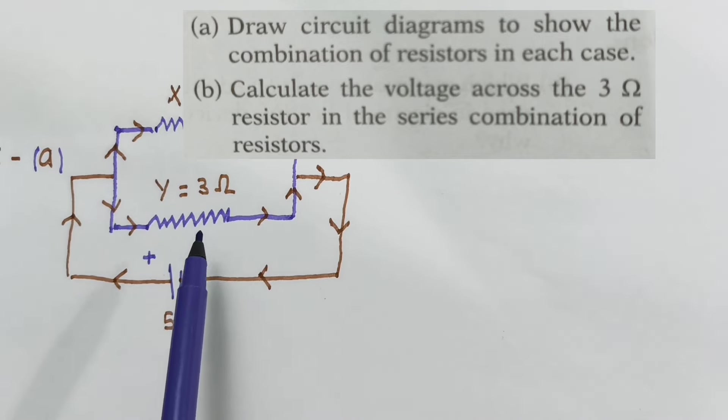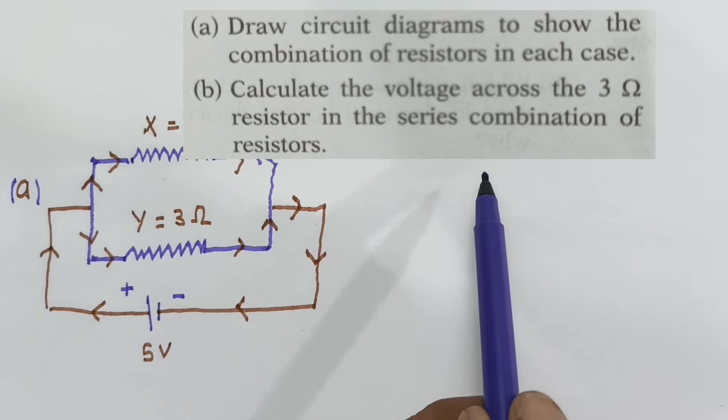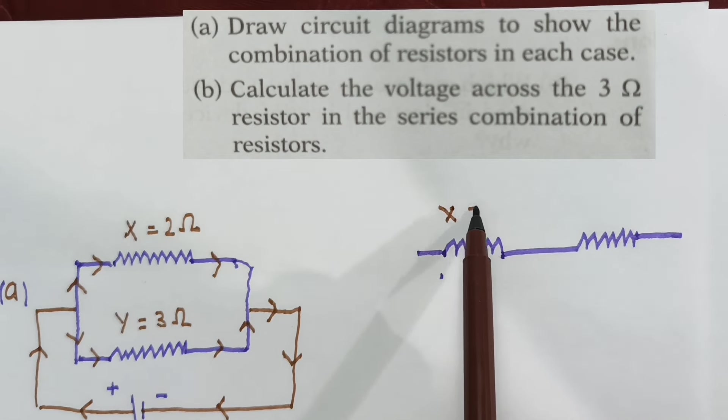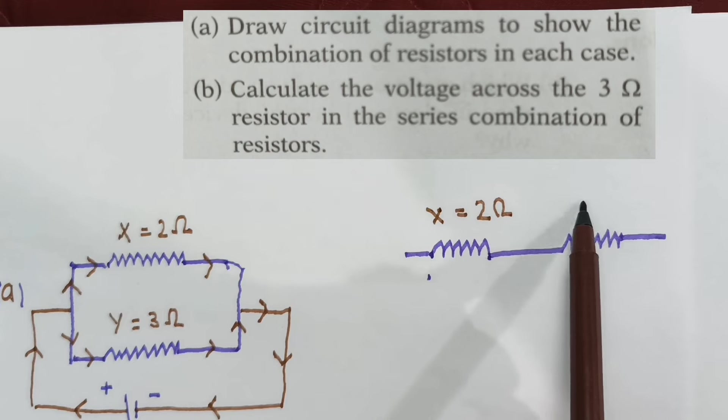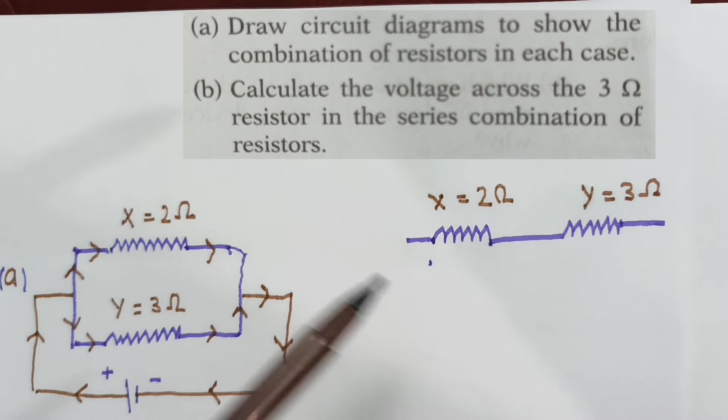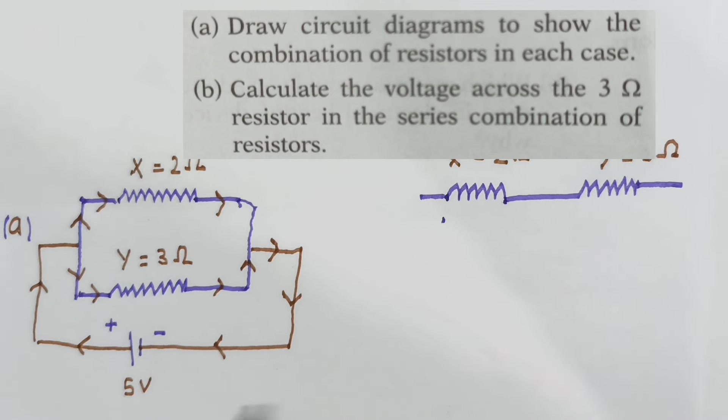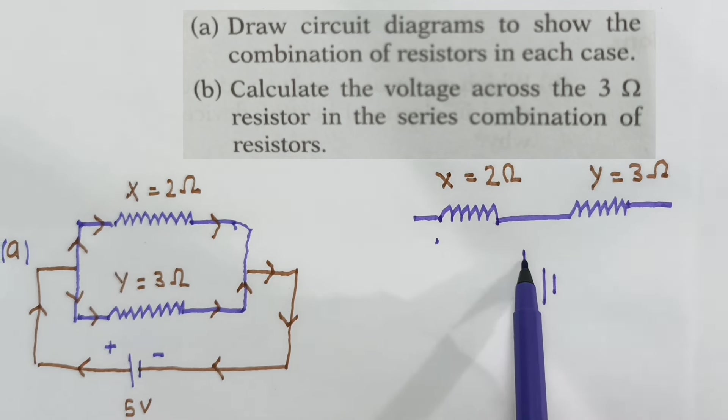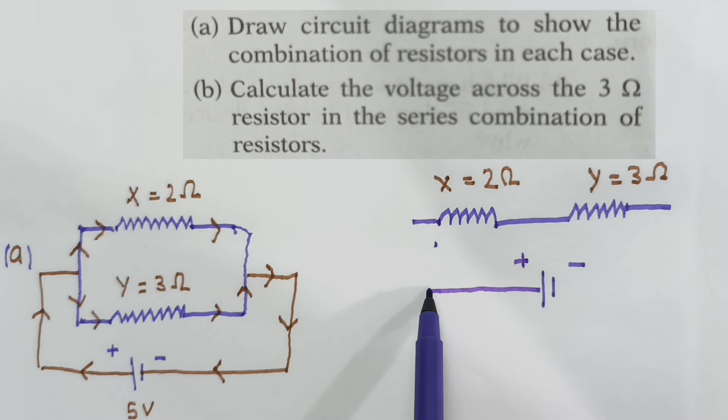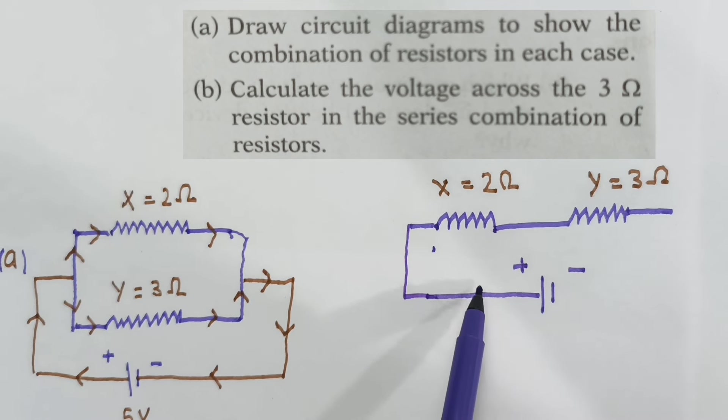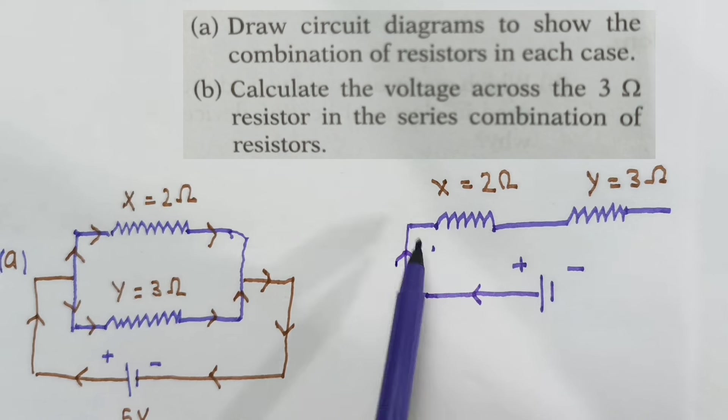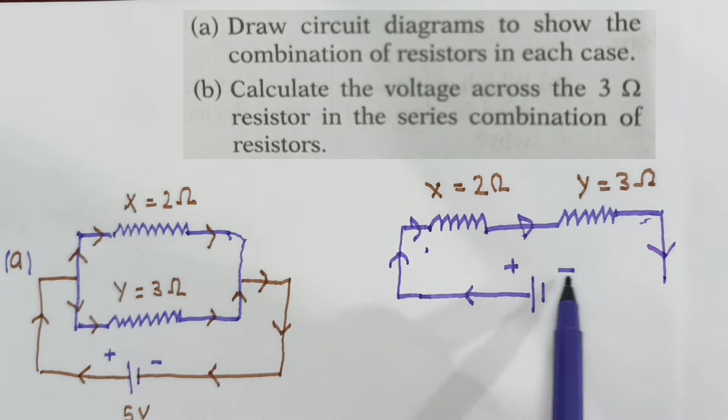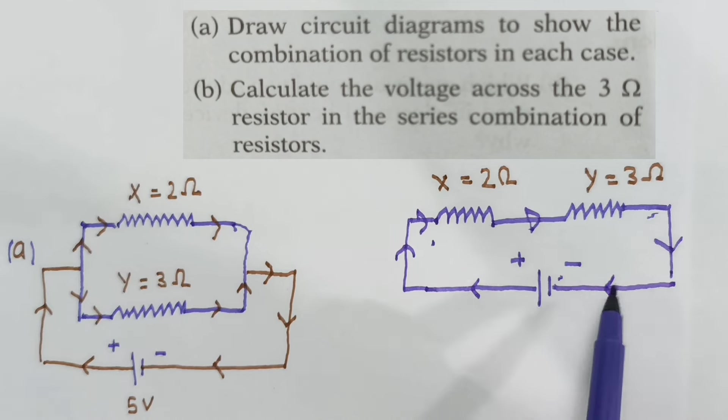Here is the current. On the circuit line we have two resistances. X is equal to 2 ohm, Y is equal to 3 ohm. The battery is already there, you can see. This is the plus terminal, this is minus. The current flow will go, here is current. This is the circuit diagram.